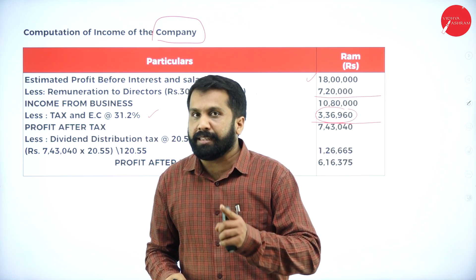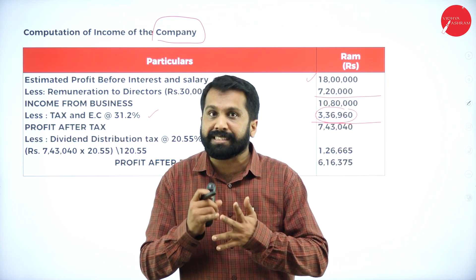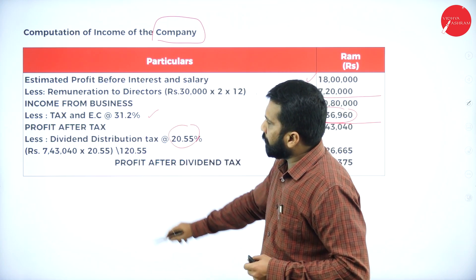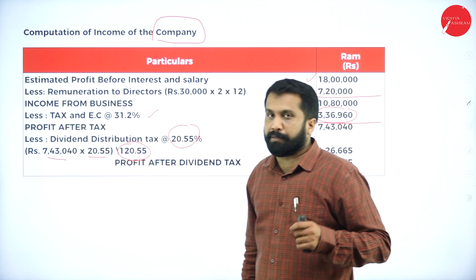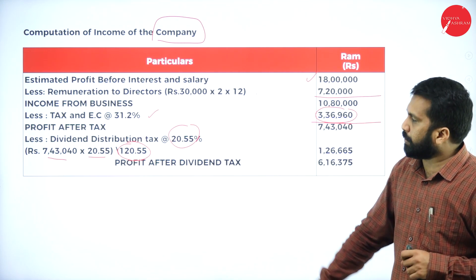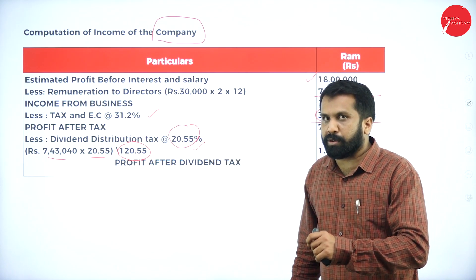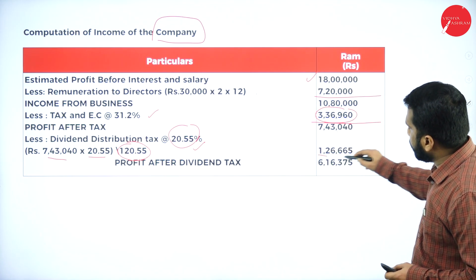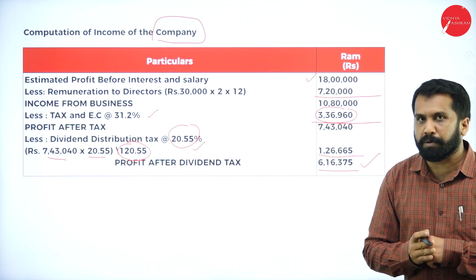In case of a company, there are two taxes: normal tax and dividend distribution tax. The dividend distribution tax rate is 20.55%. Since dividend is included in the distributed amount, we divide by 120.55 to find the DDT. Subtracting both taxes gives profit after tax of approximately 6 lakh 16,375.